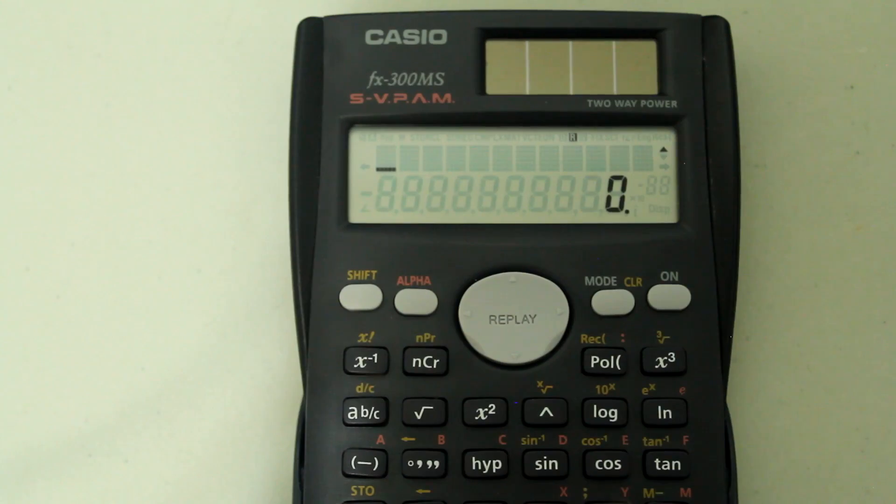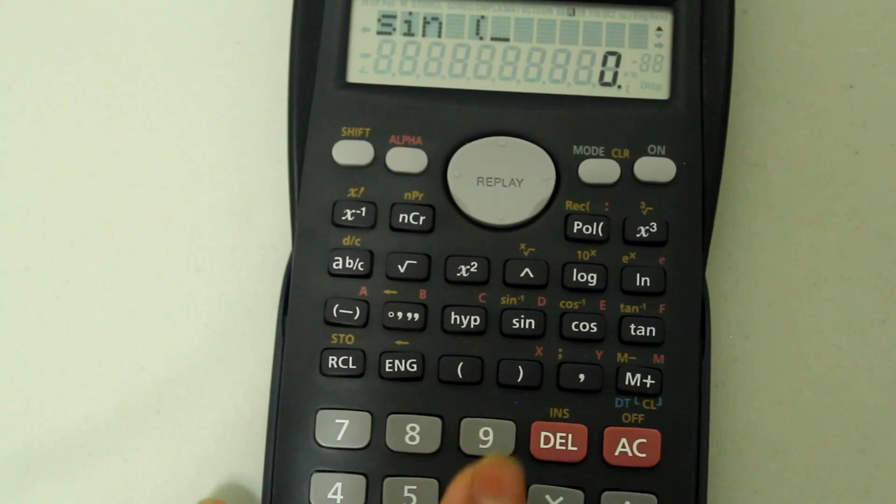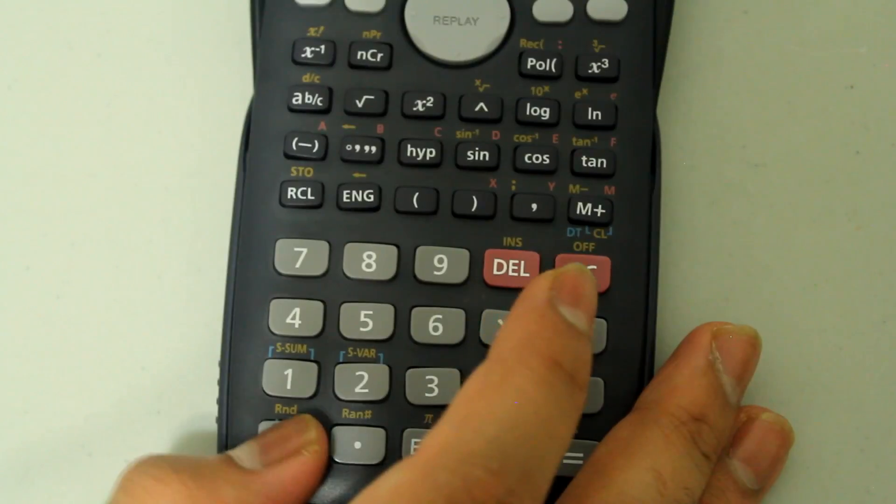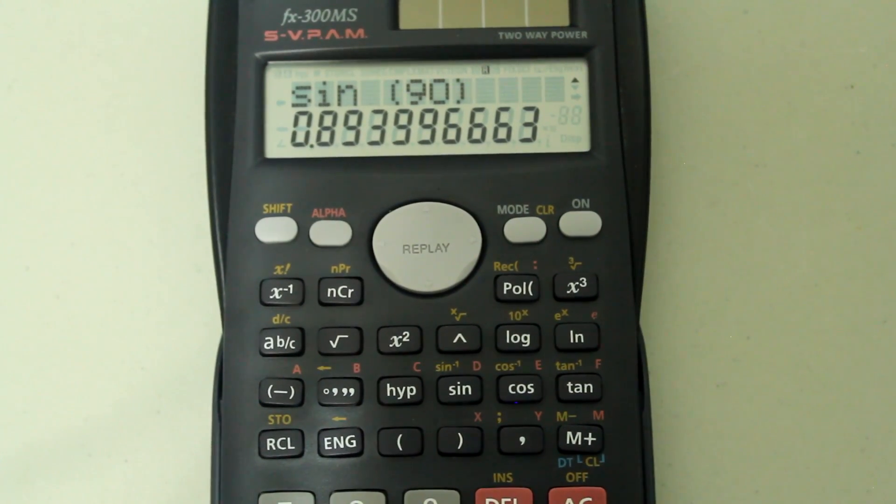We know that sine of 90 degrees is 1, but if I type in sine, parentheses 90, close parentheses, and press equals, I get roughly 0.89.